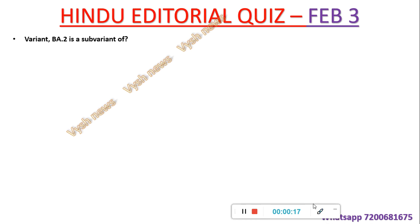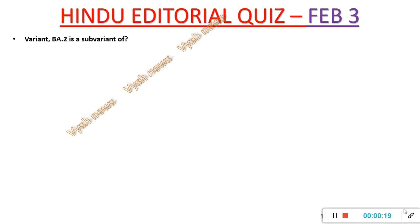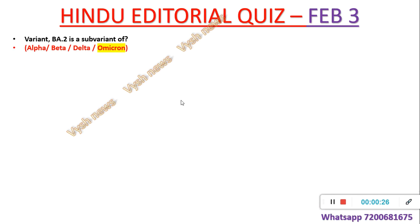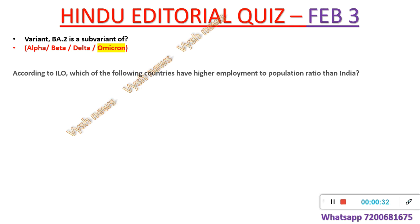BA.2 is a sub-variant of which virus? If you see — Alpha, Beta, Delta, Omicron — Omicron is the latest one, and now a sub-variant called BA.2 has come and is spreading very fast. That article has been discussed in detail in the editorial — go and watch it.